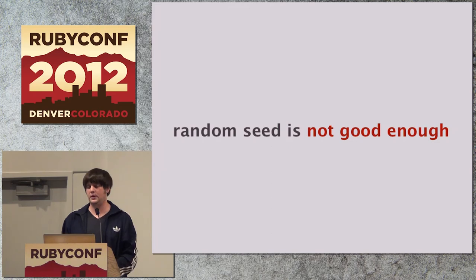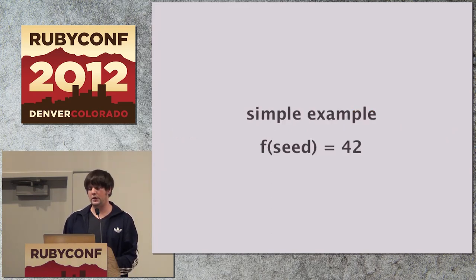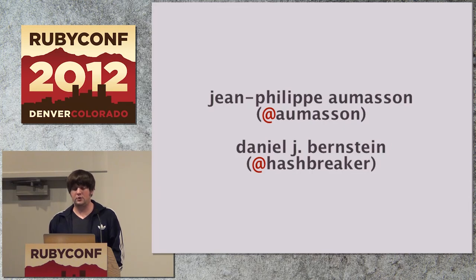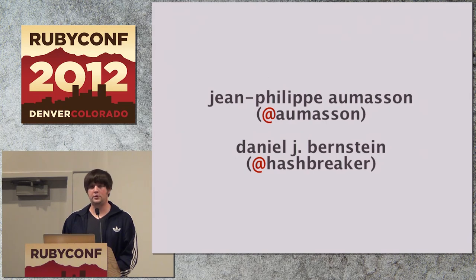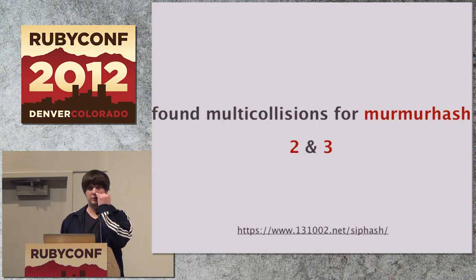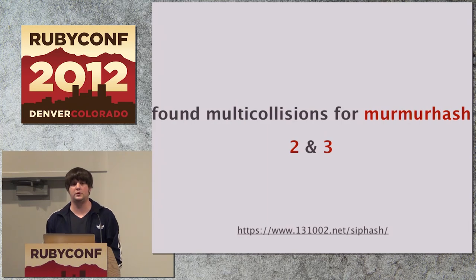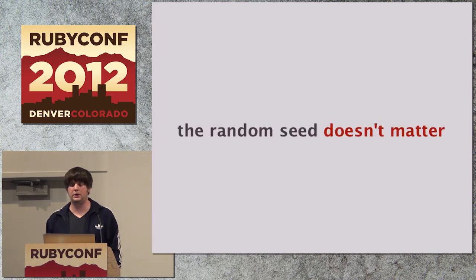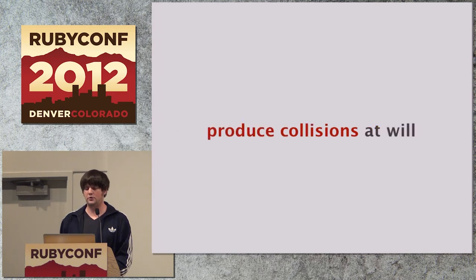To see why: imagine a very stupid hash function that takes in a random seed but always outputs 42 — this will never be random regardless of how good your seed is. It turns out that Jean-Philippe Aumasson, of SHA-3 fame who invented Blake, and Daniel J. Bernstein, you probably know him too — while they were working on a hash function, they found out how to produce multi-collisions for murmur hash in its versions 2 and 3. And they were even able to produce this with the fix applied last year of randomizing the seeds. The problem is those hash functions are used in CRuby, JRuby, and Rubinius in some form. It simply doesn't matter whatever the random seed is — you can still produce collisions at will.